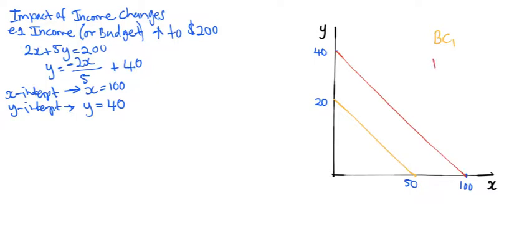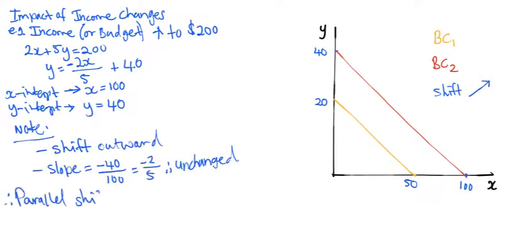Let's call this budget constraint number 2. Note how this compares to the original budget constraint. The slope has not changed. It is still negative 2 over 5. A parallel shift outwards of the original budget line occurs as a result of the increase in income.